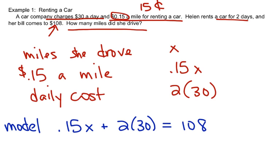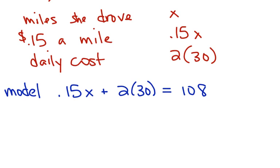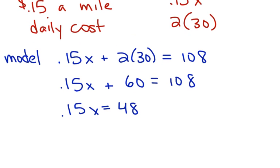Once you've got your model, now you're going to solve it and make sure the answer that you get is a reasonable number. So .15X plus 30 is equal to 108. Wait, I should make this 60 and not 30. Let's try this again. Then I'm going to subtract 60, and 108 minus 60 is 48. And then I'm going to divide by .15, and I'm going to find out that X is 320 miles.